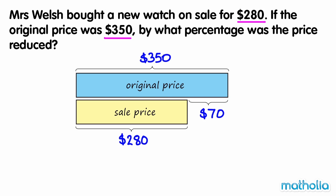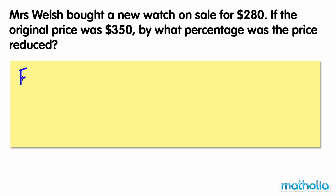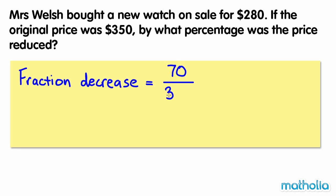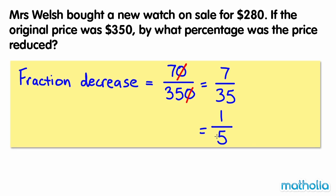To find the percentage the price was reduced, let's first find the fraction the price was reduced, then convert it to a percentage. The fraction decrease of the price is equal to the amount decrease over the original price. 70 over 350 is equal to 7 over 35. Dividing both numbers by 7 gives 1 fifth, the simplest form of the fraction.